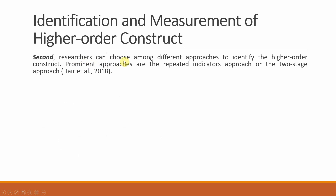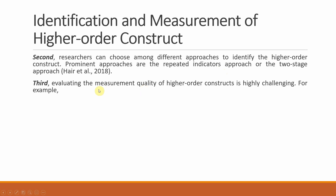The second concern is that researchers can choose among different approaches to identify higher order constructs. The prominent approaches are the repeated indicators approach and the two-stage approach. Normally the two-stage approach is used. The third concern is that evaluating the measurement quality of higher order constructs is highly challenging. Establishing quality criteria for lower order constructs differs from establishing quality criteria for higher order constructs. For higher order constructs, you need to assess outer weights and their significance using different analytical criteria.